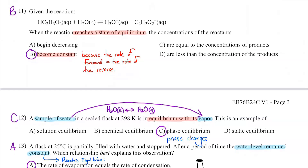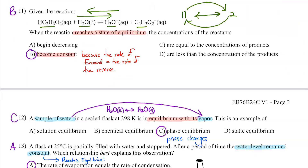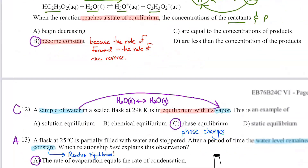Number eleven: given the reaction, when it reaches a state of equilibrium, the rate of the forward equals the rate of the reverse. Because of that, the amounts of reactants and products stay constant — that's dynamic equilibrium. Think of it this way: if I have 11 people on one line and 2 on another, and one person changes from each line every minute, the people are changing but the actual number stays constant. At equilibrium, the concentrations of the reactants and products stay constant.